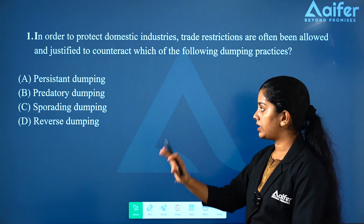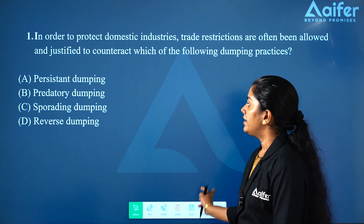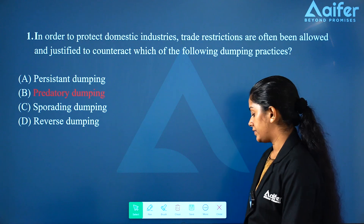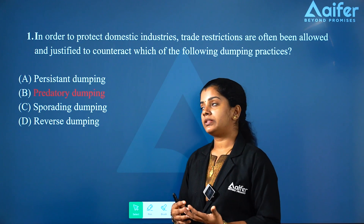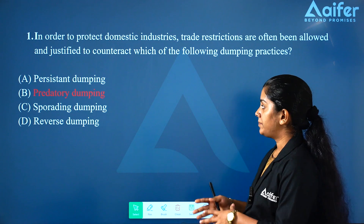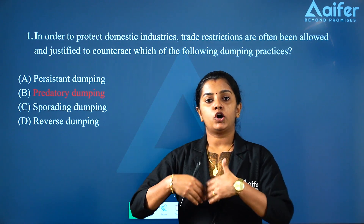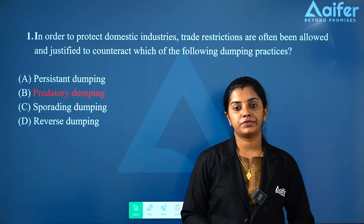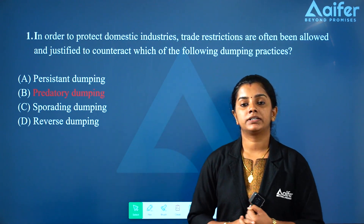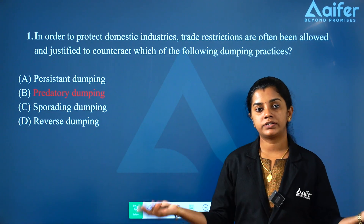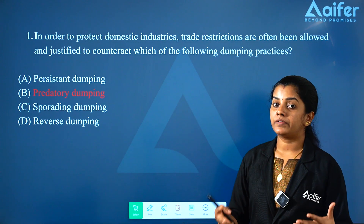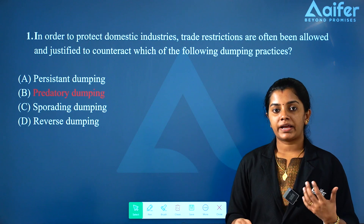The correct answer is predatory dumping. What is predatory dumping? We put a low price in the foreign market. If you put a low price in the product, you get market access. With market access, you can eliminate the competitors and eliminate the monopolies. You can reduce the price, then increase the price.